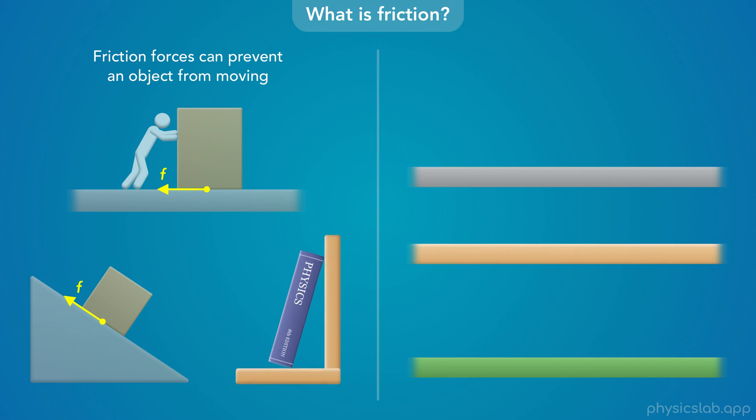And if you lean an object against a surface, there might be multiple friction forces preventing it from falling.